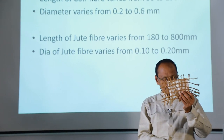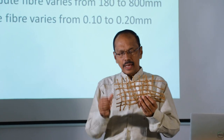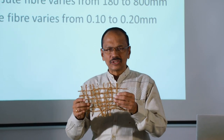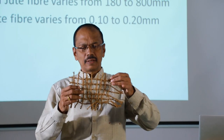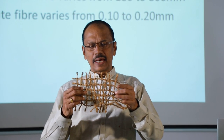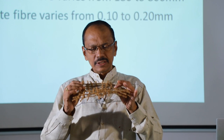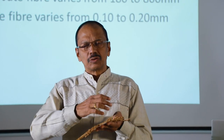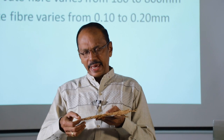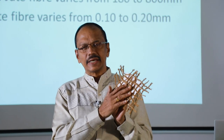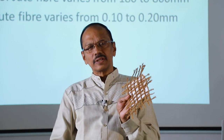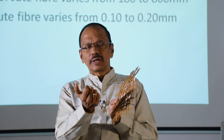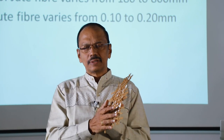You can see the coir geotextiles — there is a lot of hairiness here because the fiber is only 5 centimeters to a maximum of 15 centimeters in length. It has an inherent property that there will be a lot of hairiness. When it goes to a product you may need a singeing operation to get rid of the hairiness, but for geotextiles this hairiness is an advantage. When applied on a slope and vegetation grows, this hairiness helps the vegetation to catch hold in that particular place.